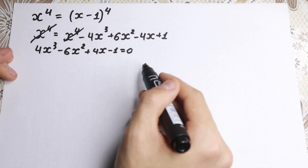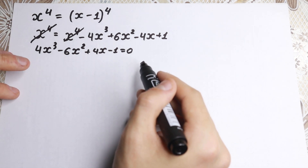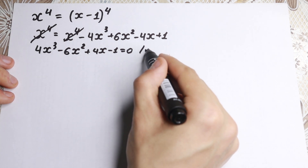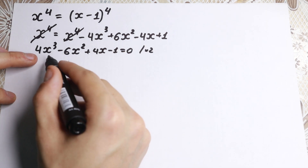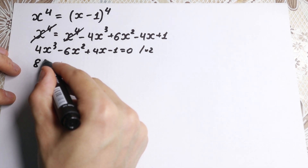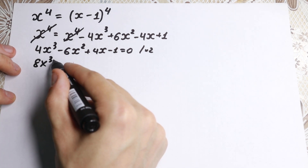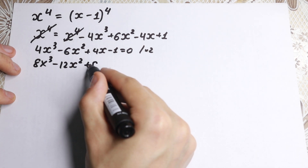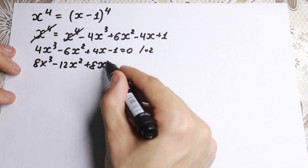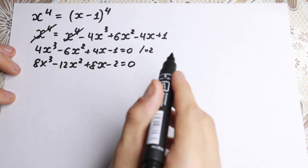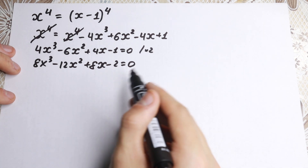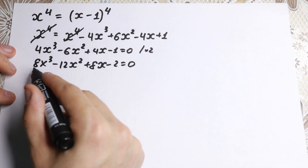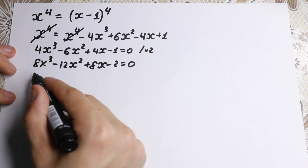Now I want to show you maybe the best approach — a really interesting trick. Let's multiply both sides by 2. We get 8x cubed minus 12x squared plus 8x minus 2 equals zero. A lot of students ask why I multiply by 2 — and here's why: 8 is 2 cubed.